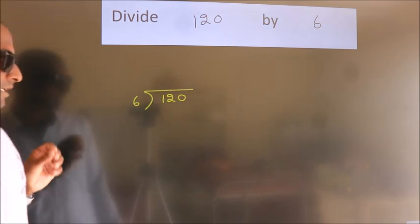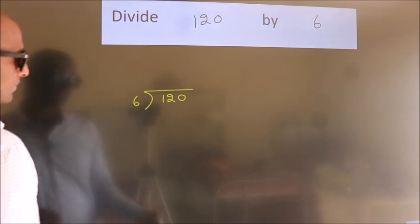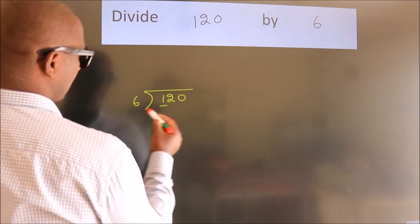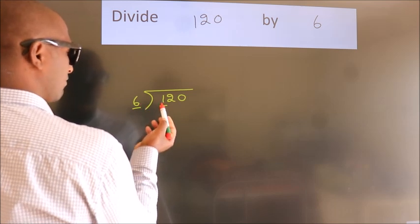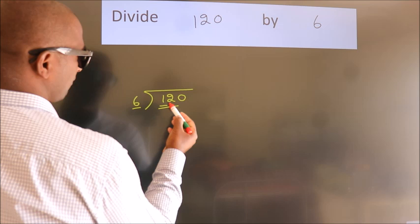Next, here we have 1, here 6. 1 smaller than 6. So we should take 2 numbers, 12. When do we get 12?